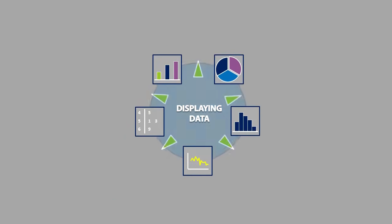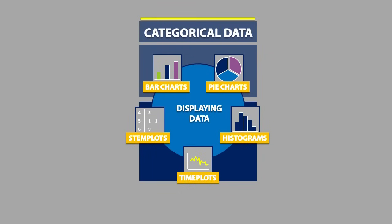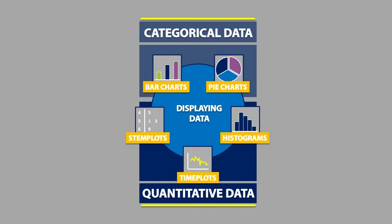We can use these tools as a way of displaying data. We often use bar charts and pie charts to display categorical data, and we often use stem plots, time plots, and histograms for displaying quantitative data.